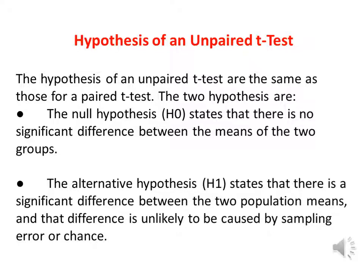The hypotheses of an unpaired t-test are the same as those for the paired t-test. The first is the null hypothesis, denoted by H0, which states that there is no significant difference between the means of the two groups. The null hypothesis for the independent t-test is that the population means from the two unrelated groups are equal — H0: mean1 = mean2.